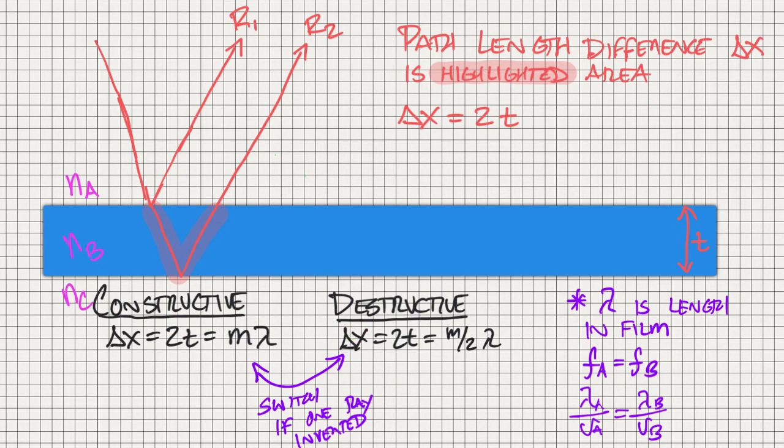If it's destructive, this path length difference would be a half wavelength, or some integer multiplier of one half of a wavelength. So one half, one and a half, two and a half, or so forth.